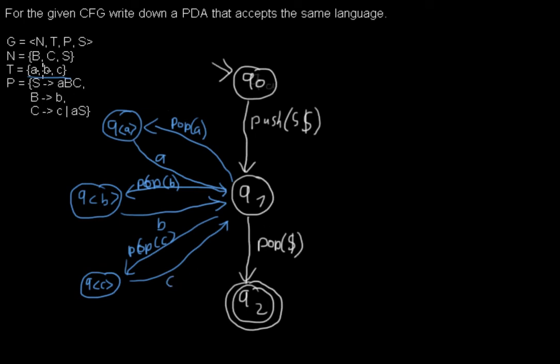And now for every one of the three non-terminal symbols there's another state. So there's one for the B. The colors just look too close to the other one, so I'm... Now this one looks different enough I guess. So there's one state for the B, one state for the C, and one state for the S.